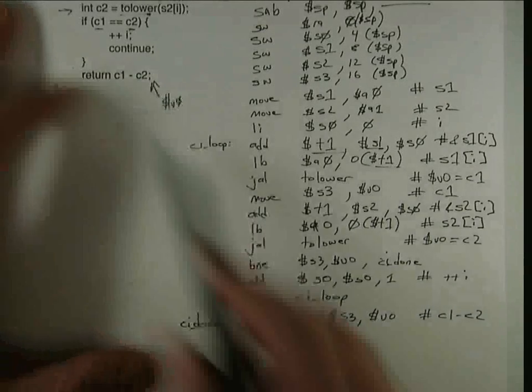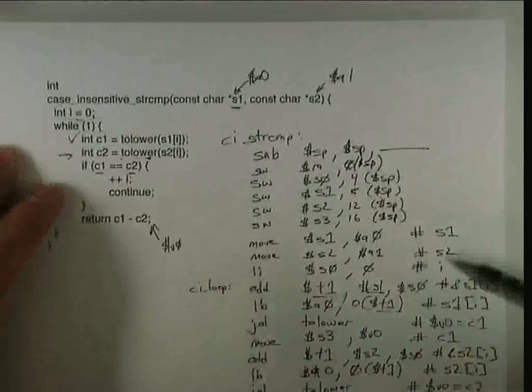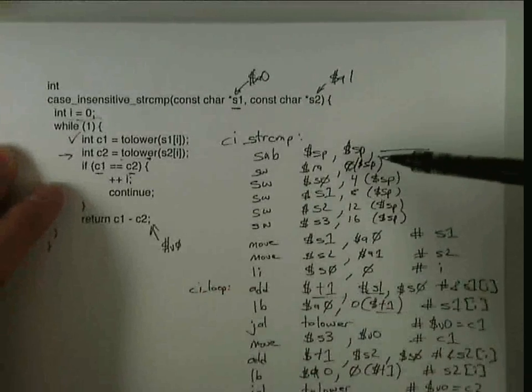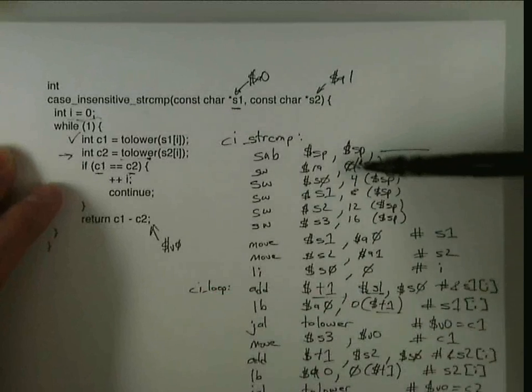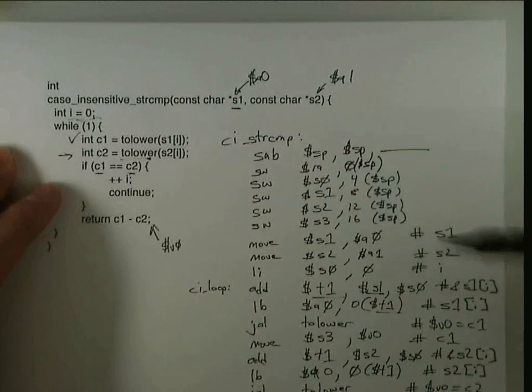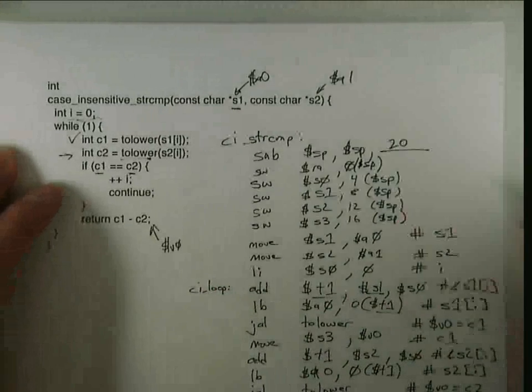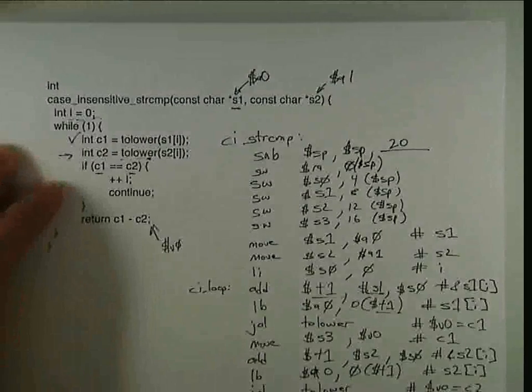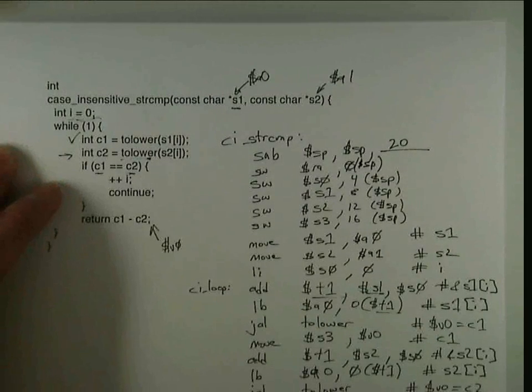And I am ready to return from the function, but before I can do that, I have to fix up my stack. So first we'll figure out how big our stack frame was. We saved one, two, three, four, five things, each four bytes. So again, it's a 20-byte stack frame that we allocated.